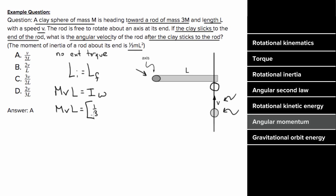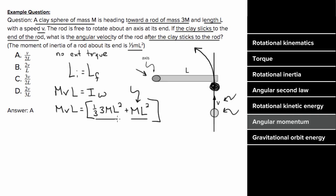The final moment of inertia includes the rod and the clay. The rod's moment of inertia about its end is (1/3)(3M)L² = ML². The clay stuck at the end contributes ML² (point mass at radius L). Total I = ML² + ML² = 2ML². Setting MVL = 2ML²·ω, canceling M and one L, we get ω = V/(2L).